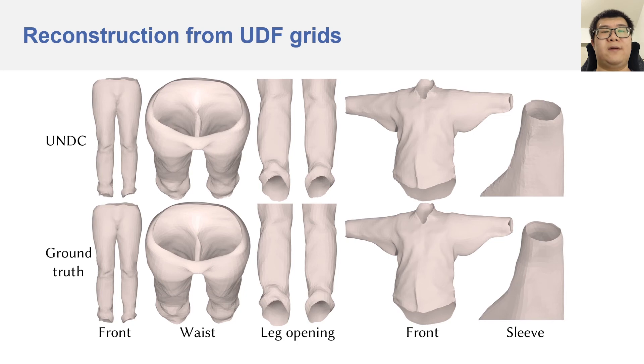In the next experiment, we reconstruct meshes from grids of unsigned distances. To the best of our knowledge, UNDC is the only method that can perform this task. Therefore, we do not compare with others. Our method can faithfully reconstruct open surfaces on these cloths.